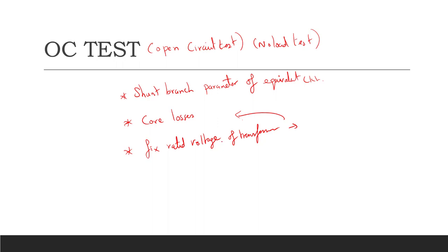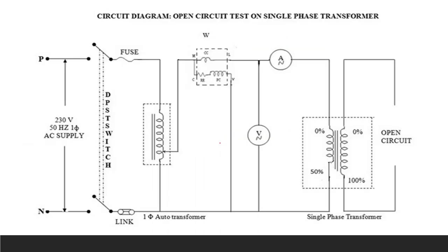This is an indirect testing methodology where we are not going to use any load. Instead of using load, we are going to find out the losses. From the losses we are going to find out the efficiency by assuming some load for the system.